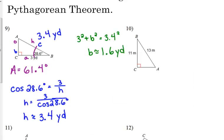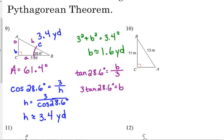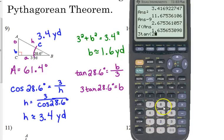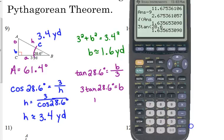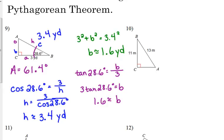I could have also set up that other trig ratio. I could have set up tangent of my angle. 28.6 is equal to the opposite, which is side B, over the adjacent, which is 3. So 3 tangent of 28.6 should give me 1.6. 3 tangent of 28.6. Yes, it does. Okay? So either way, you get the same conclusion for side B, which is Pythagorean theorem versus another trig ratio. Whatever you are most comfortable with.